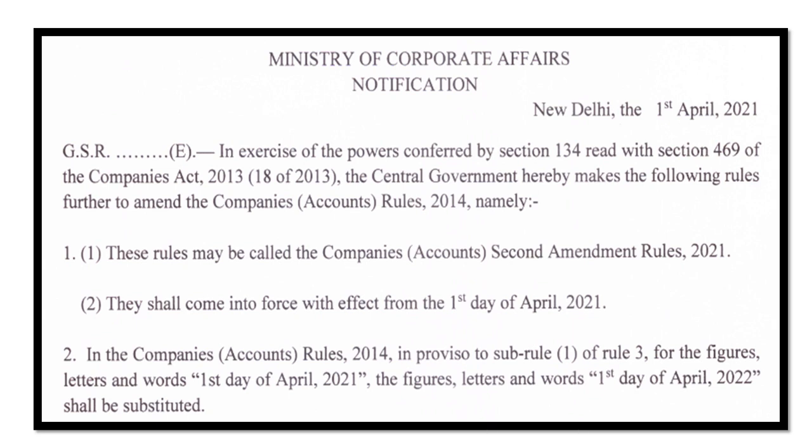The Companies Accounts Amendment Rules 2021 which came on MCA's website a few days back — if you haven't watched that video, the link is in the eye button above and in the description box. That video covered the requirement regarding accounting software: every accounting software that companies use to maintain their books of accounts must have an audit trail feature, so that an edit log is created for every change, and that feature must never be disabled. This was mandatory, effective from the first day of April 2021.